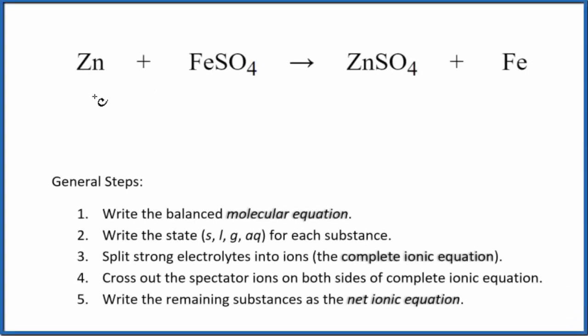In this video, we'll write the balanced net ionic equation for Zn plus FeSO4. This is zinc metal plus iron sulfate. The first thing we need to do when we balance net ionic equations is we need to balance the molecular equation.